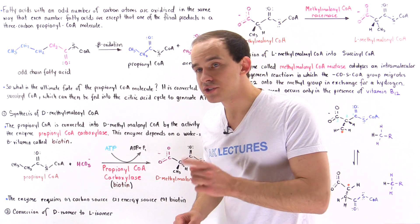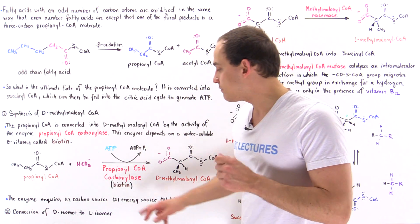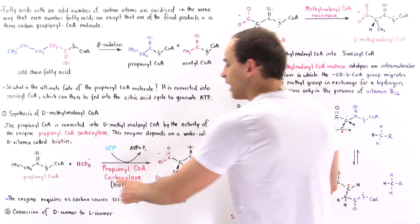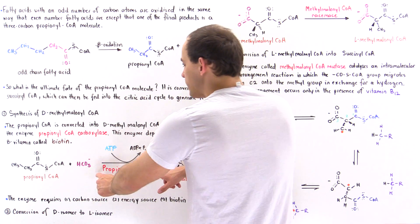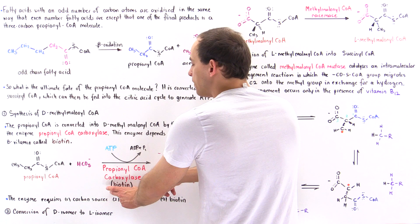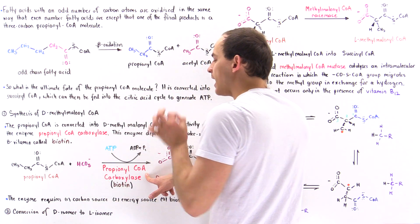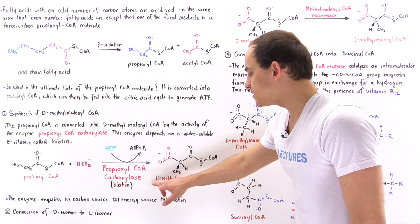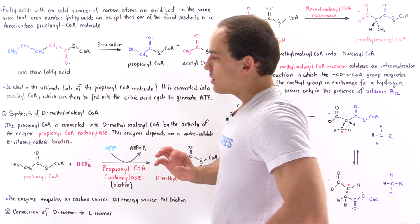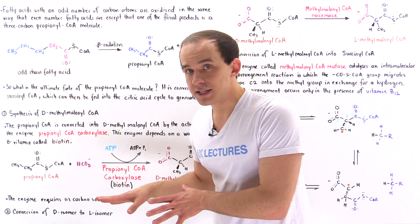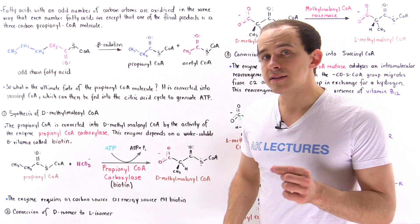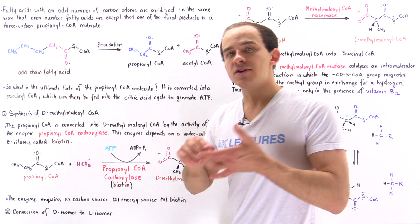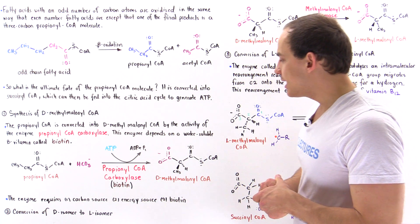This entire process requires biotin, vitamin B7. So propionyl coenzyme A carboxylase uses biotin, hydrolyzes an ATP, and attaches carbon dioxide onto the propionyl coenzyme A to form the D-isomer of methylmalonyl coenzyme A. The key takeaway from step 1 is that propionyl coenzyme A carboxylase needs three things: an energy source (ATP), a carbon source (bicarbonate), and a biotin molecule.